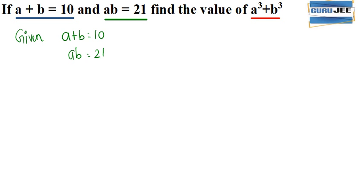So here we have to find a cube plus b cube. With the given things we can understand that we could use the identity here.